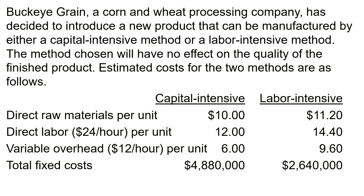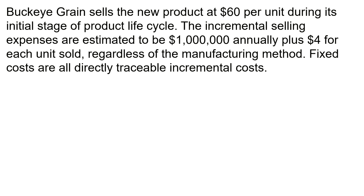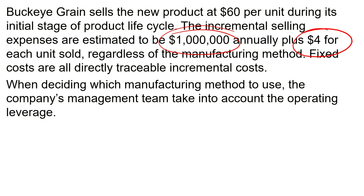Buckeye Grain sells the new product at $60 per unit during its initial stage of the product life cycle. The incremental selling expenses are estimated to be $1,000,000 annually plus $4 for each unit sold, regardless of the manufacturing method. Fixed costs are all directly traceable incremental costs. So these selling costs have both a fixed element — the $1,000,000 — and a variable element of $4 per unit.